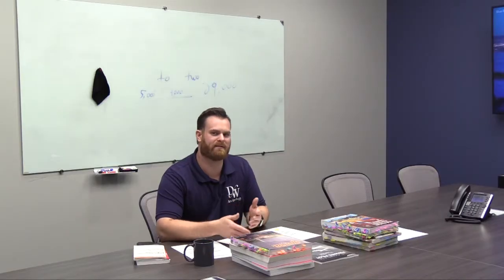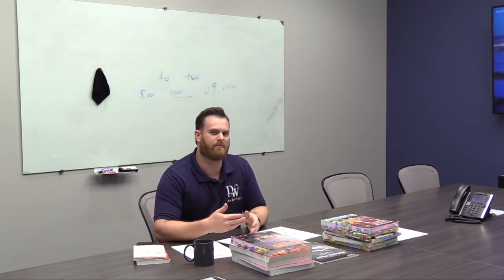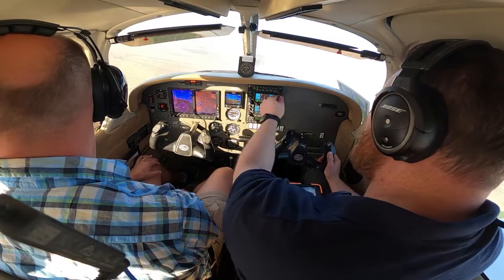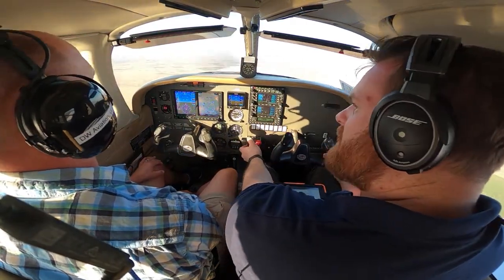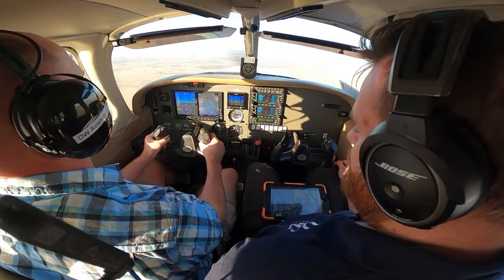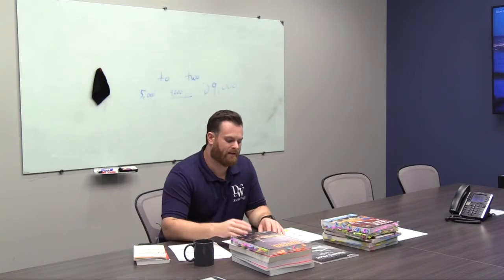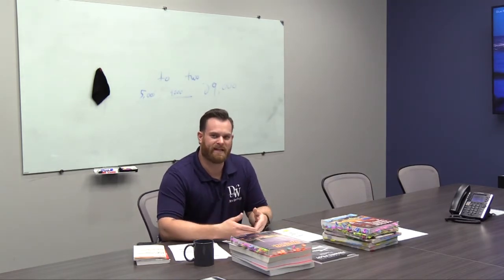Any time you're doing a positive three-way exchange of controls, that's a trigger for those call outs. Whoever's flying will say 'you have controls,' the other person verifies 'I have controls,' and you verify again. Anytime you do a normal checklist, you want to call out whether you're initiating, interrupting, resuming, or completing that checklist.